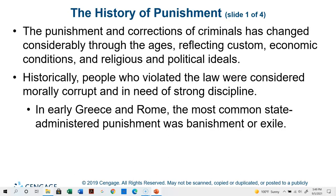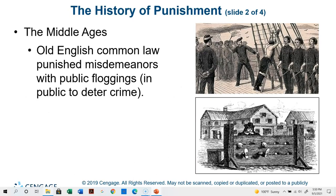The punishment and correction of criminals has changed considerably through the ages, reflecting things like custom, economic conditions, and even religious and political views. Historically, people who violated the law were considered morally corrupt and in need of strong discipline. In early Greece and Rome, the most common state-administered punishment was banishment or exile — they would force you to leave your community. In the Middle Ages, old English common law punished misdemeanors with public floggings or whipping.